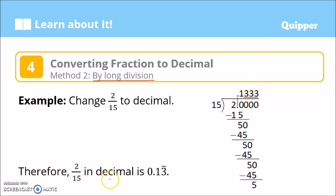Therefore, 2/15 in decimal form is 0.13 bar. When we say 3 bar, the bar over the 3 means the 3 repeats infinitely. The 1 is not included in the repetition, only the 3. So the second method for converting fractions to decimals is by using long division method.